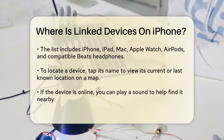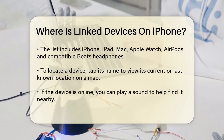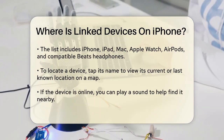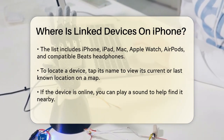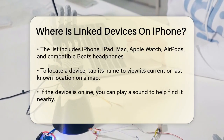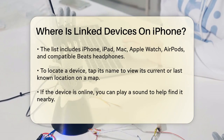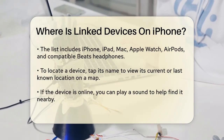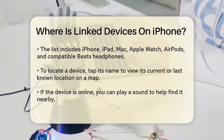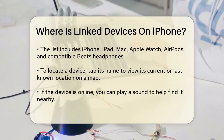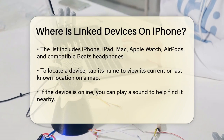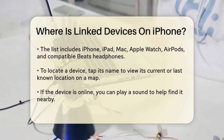If you want to locate a specific device, simply tap on its name in the list. The app will show you the device's current or last known location on a map. If the device is online, you'll see its exact location, and you can even play a sound to help you find it if it's nearby.